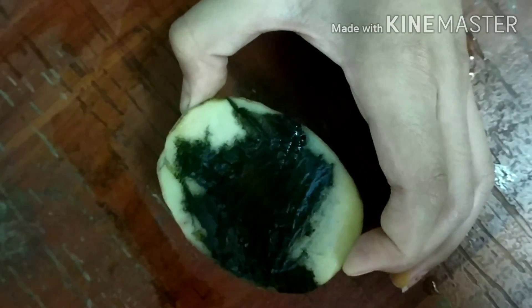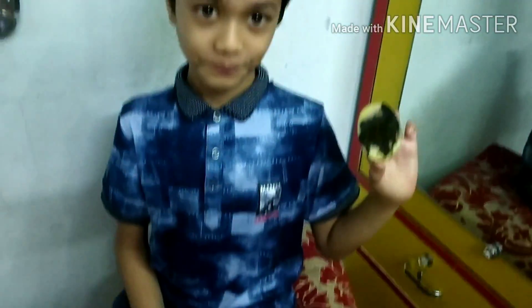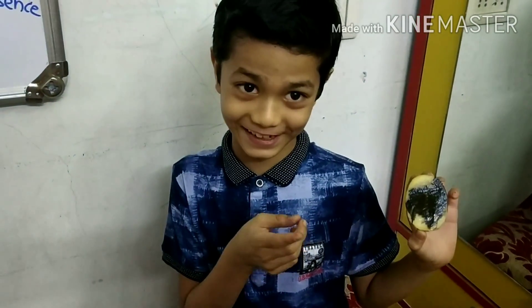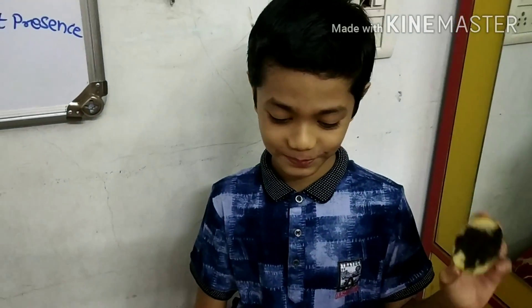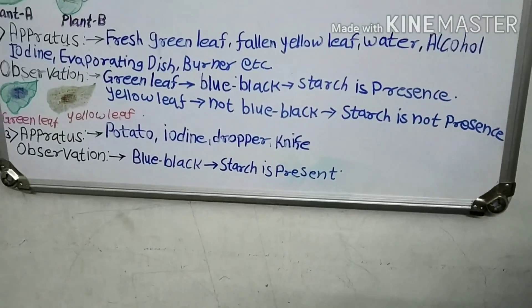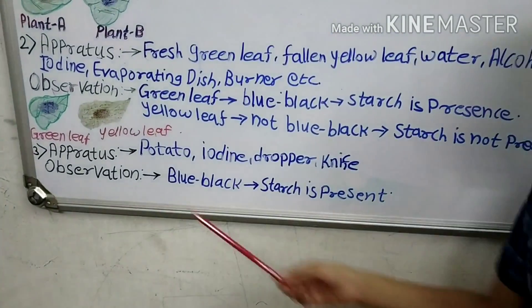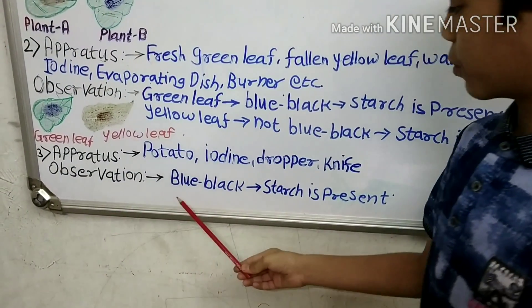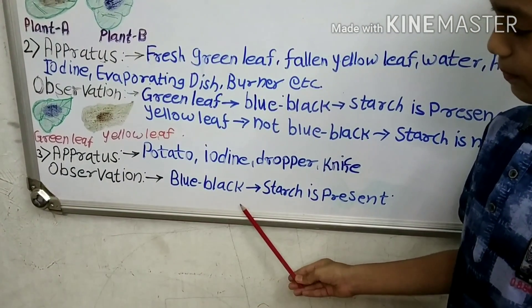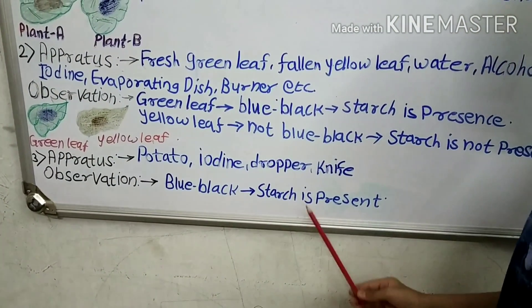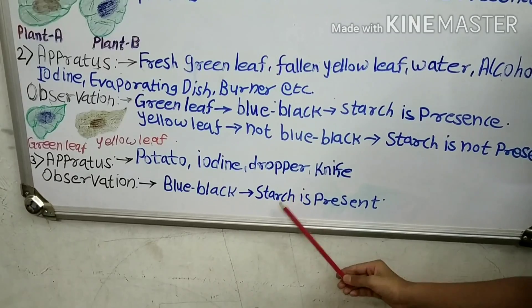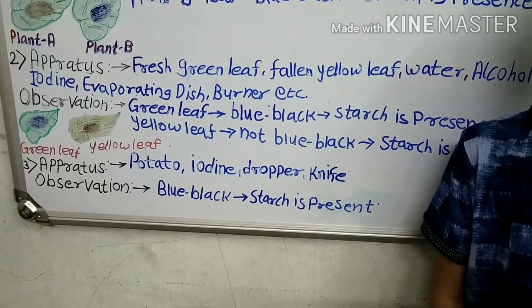You can see that the potato surface where I put the iodine has become blue-black in color. The observation of this is: the blue-black color of the potato is because starch is present in the potato.